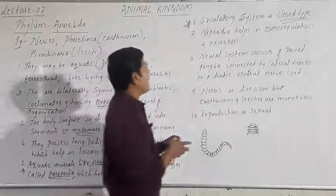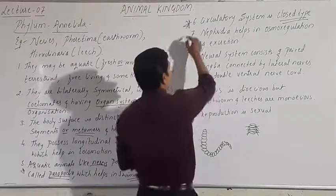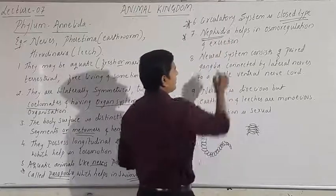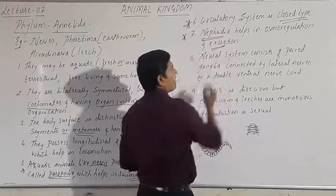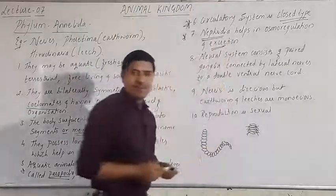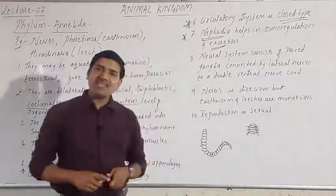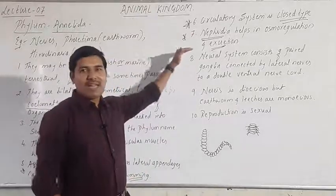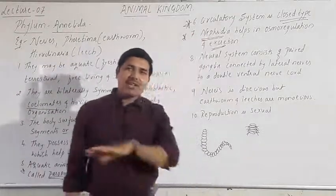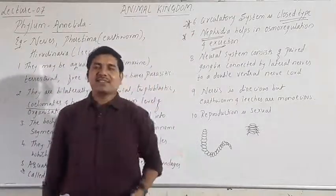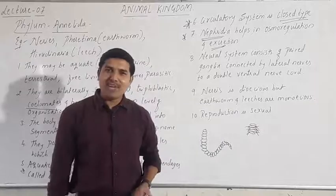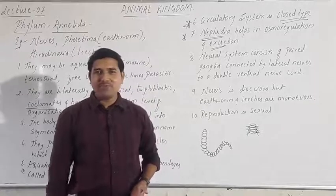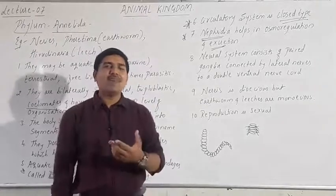The blood is red in color due to the presence of hemoglobin. There are blood vessels and the circulatory system is complete and closed. Nephridia help in osmoregulation and excretion. The excretory structures in phylum Platyhelminthes were flame cells, but here they are nephridia.